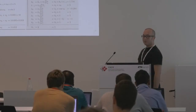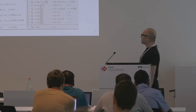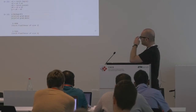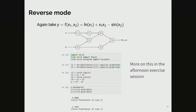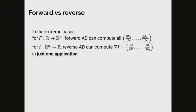This is why reverse mode is used so much in deep learning: we have a loss function — a scalar value — and we take gradients of that with respect to millions of neural network weights. This is why backpropagation was invented in the neural network community. In summary: in the extreme case of a vector-valued function of one variable, one forward pass gives the full set of partial derivatives; for a scalar-valued function of many inputs, one reverse pass gives the full gradient.